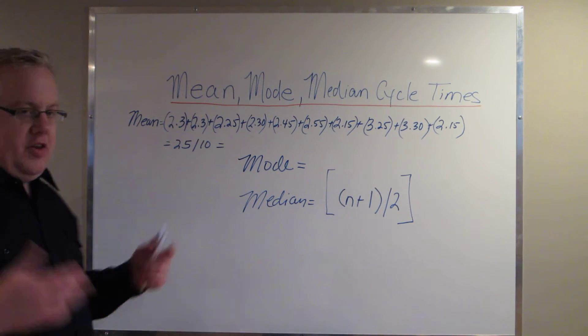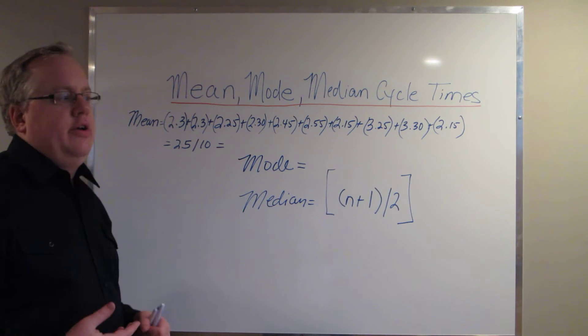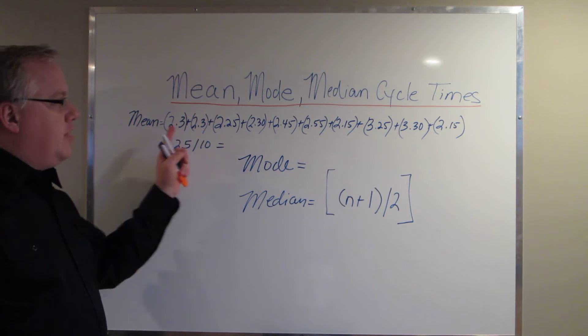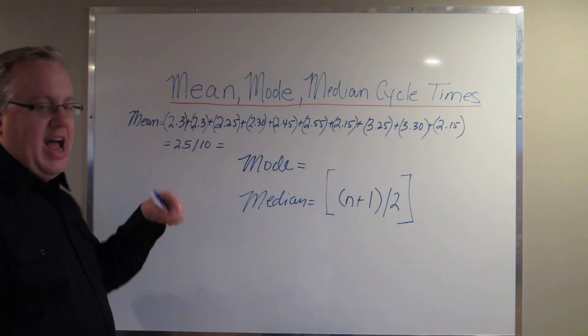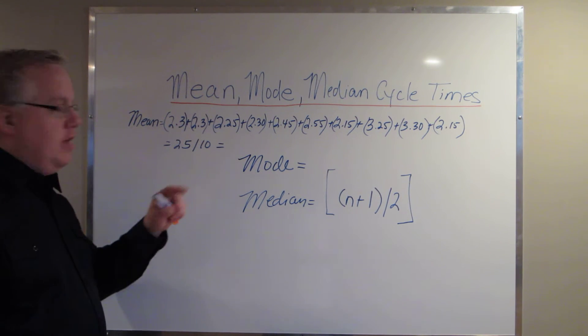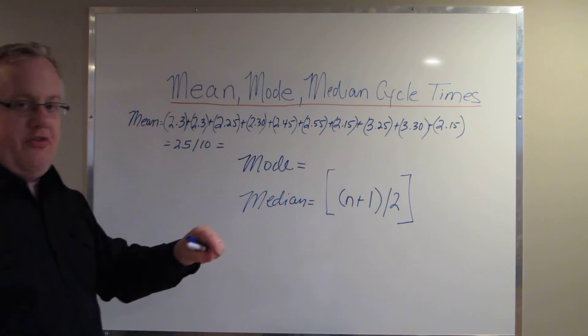But I'll give you an example of how the mean is calculated. Now the mean is, as we all know, what we all associate as average. So in this case, I took 10 cycle times. This is one half of the sample portion that I did. And the first cycle time was 2.3, then it was 2.3, then 2.25, 2.3, 2.45.